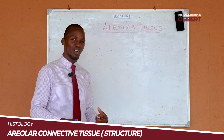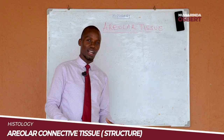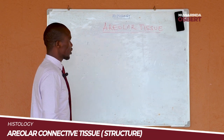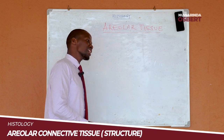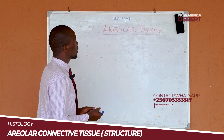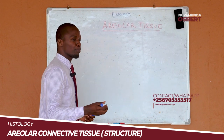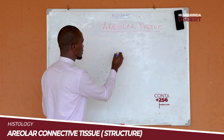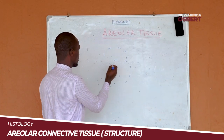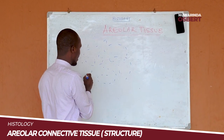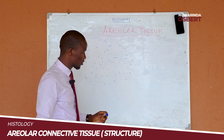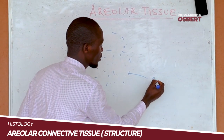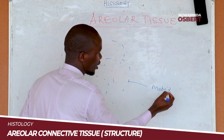A connective tissue is a tissue which is made up of a ground substance, which is also called the matrix. So I have a matrix — that is my ground substance — and within this matrix, we find different cells and fibers.